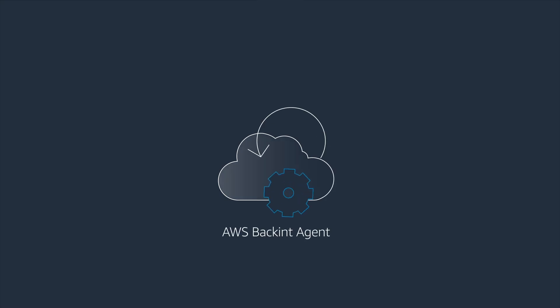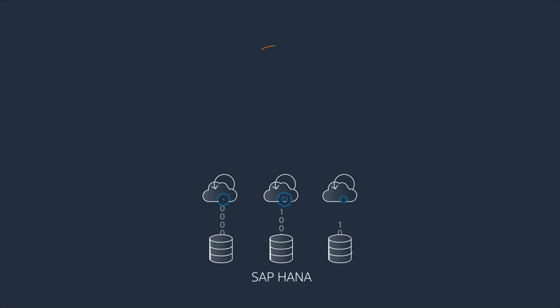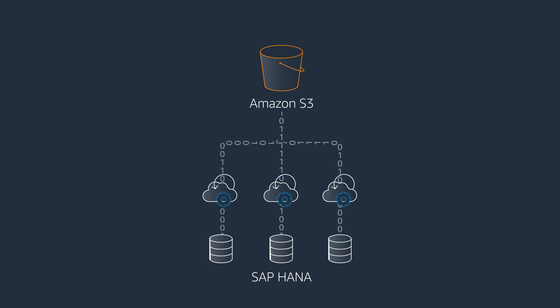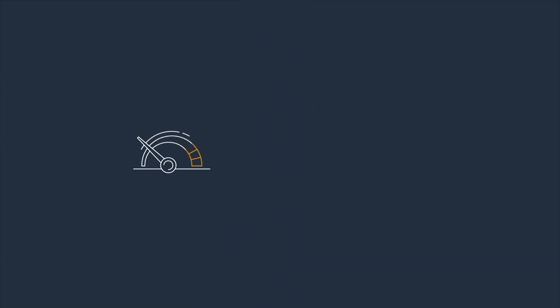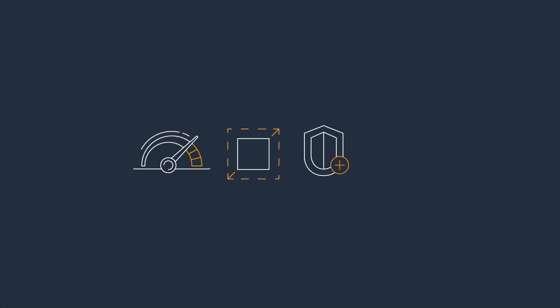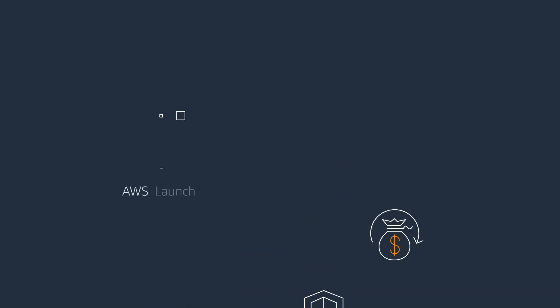AWS BackInt Agent makes it fast and easy to backup and restore your SAP HANA databases to Amazon S3. Accelerate backup times up to 2GB per second while realizing the scalability, durability, and cost-effectiveness of Amazon S3.